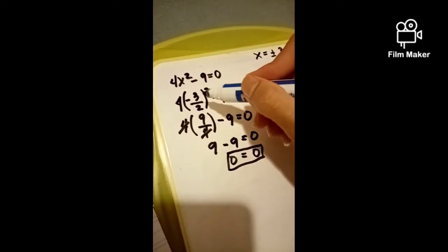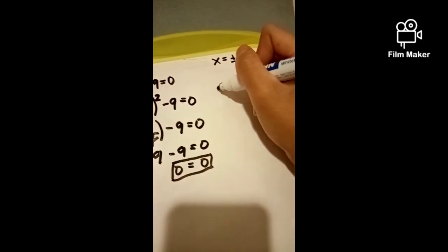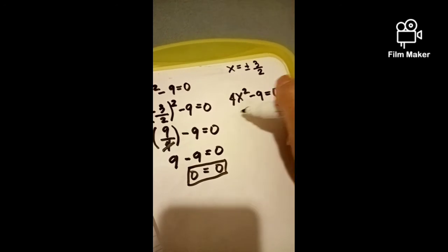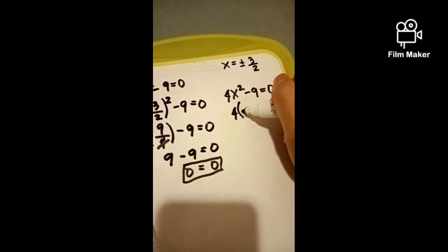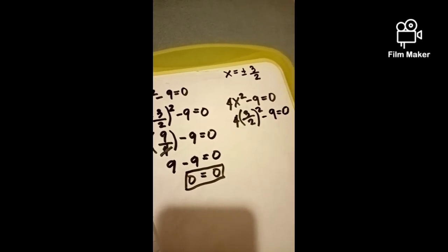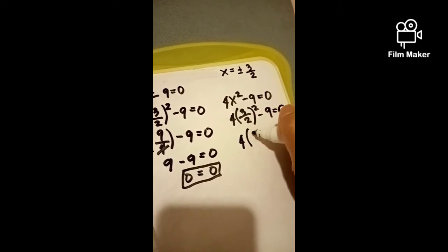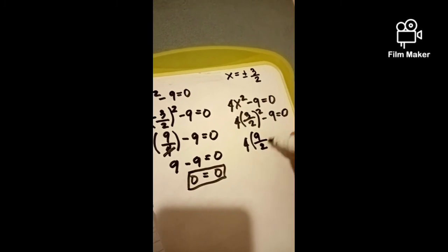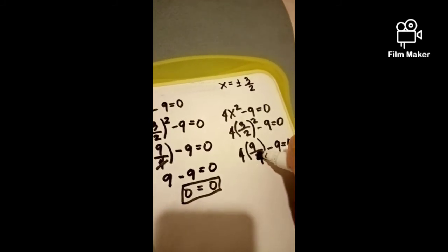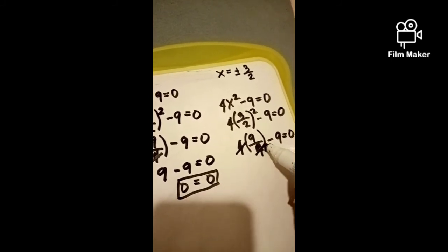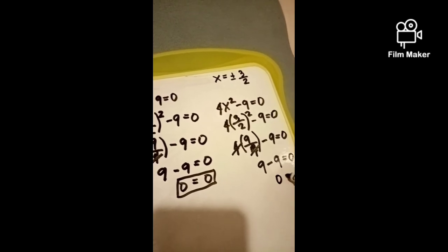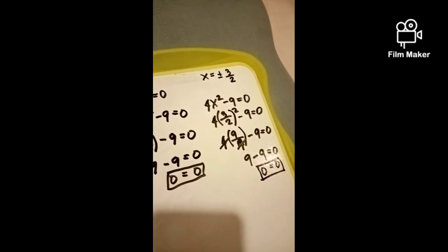Let's also verify with x equals positive 3 over 2. We have 4 times (positive 3 over 2) squared minus 9 equals 0. That gives 4 times 9 over 4 minus 9 equals 0. Eliminating the 4s leaves 9 minus 9 equals 0, so 0 equals 0. Our answer is correct. Thank you.